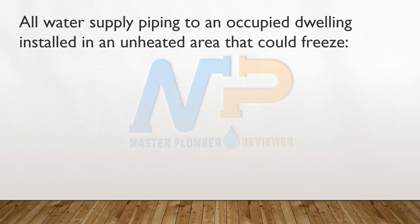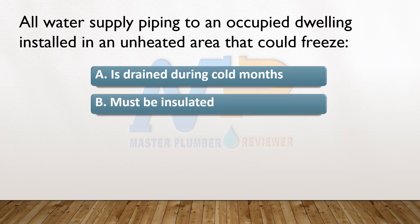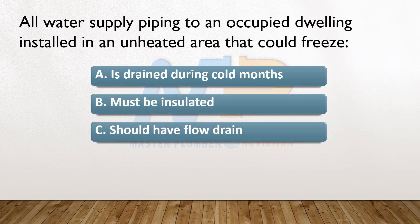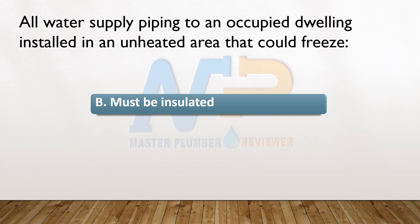All water supply piping to an occupied dwelling installed in an unheated area that could freeze: A. Is drained during cold months. B. Must be insulated. C. Should have flow drain. D. Should have backflow preventer. The answer: B. Must be insulated.